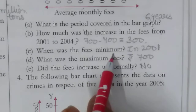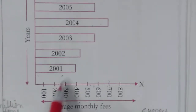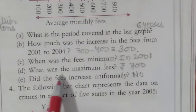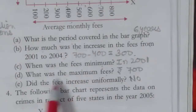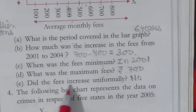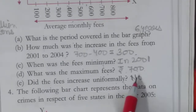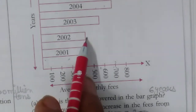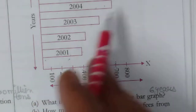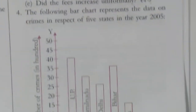When was the fee minimum? In 2001 the fees were least — 400. What was the maximum fee? In 2004 the fees were highest — 700. Did the fees increase uniformly? No, because the increments are not equal each year: from 400 to 450 is 50, then it jumps by 100, so the fee did not increase uniformly.